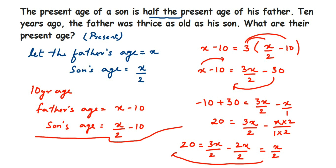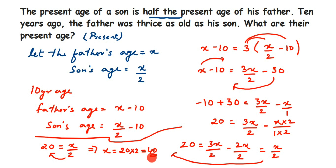We have 20 = x/2. Transposing 2 to the other side gives x = 20 × 2 = 40. Since we assumed x is the father's age, the father's age is 40 years. The son's age is half of that: 40 ÷ 2 = 20 years.